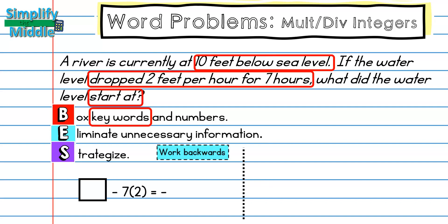I'll draw a box representing where I started, then show what happened next. It dropped two feet per hour for seven hours, and I ended up with negative 10. To find the answer, I take my negative 10 and add back what it dropped.